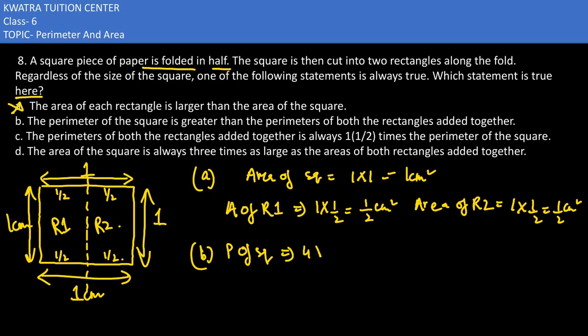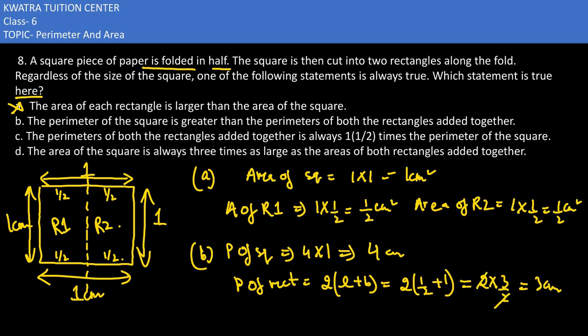Which is 4 into 1. The square is 4 cm. Now we would be finding the perimeter of rectangle, that is 2 into L plus B. What is the length of our L? Let's say half. And breadth is 1. This is 3, 3 cm.